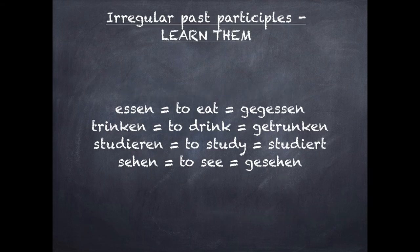There are some irregular past participles which you just have to learn. Essen (to eat) goes to gegessen. Trinken (to drink) goes to getrunken. Studieren (to study) goes to studiert. And sehen (to see) goes to gesehen. You just have to learn them.